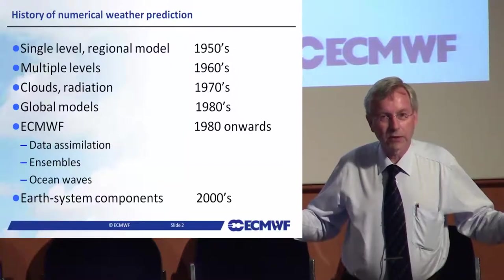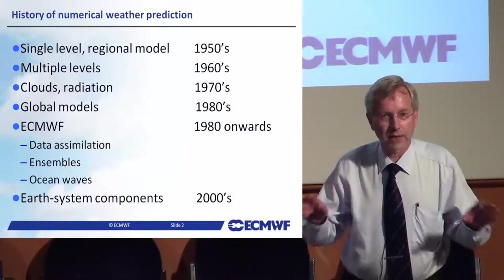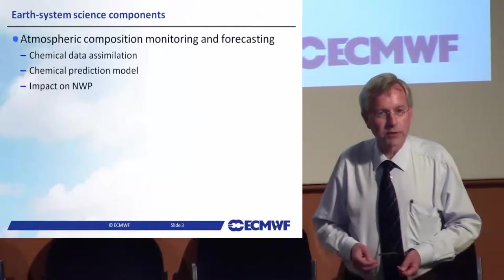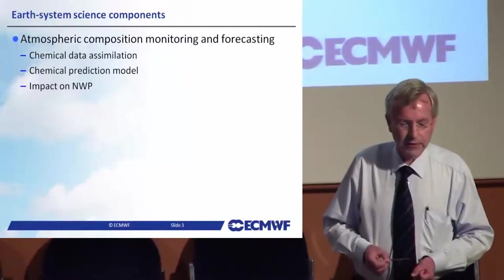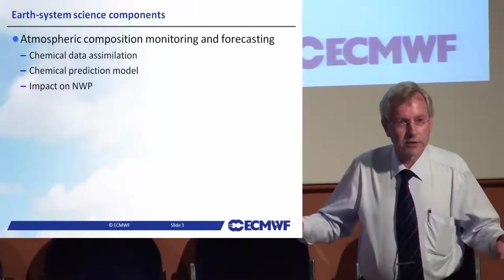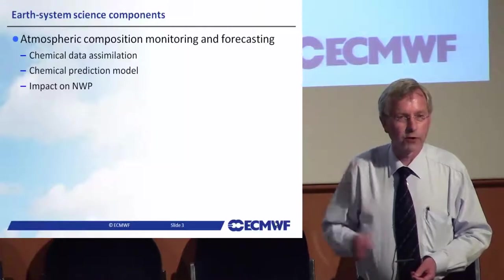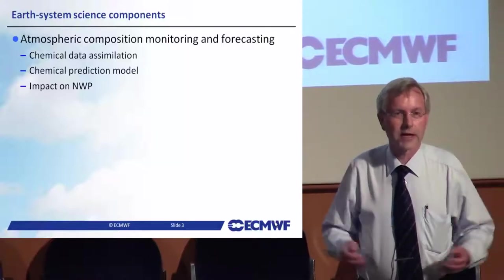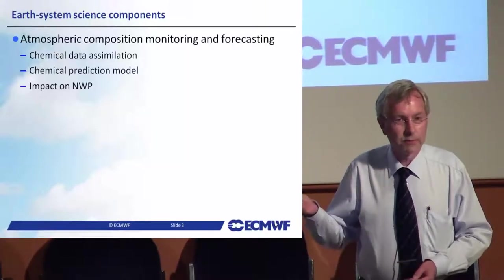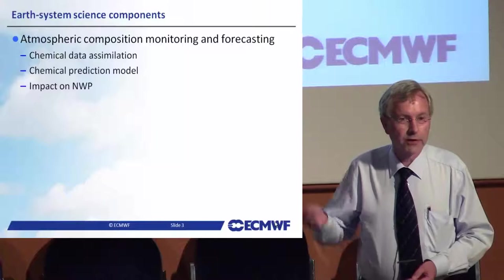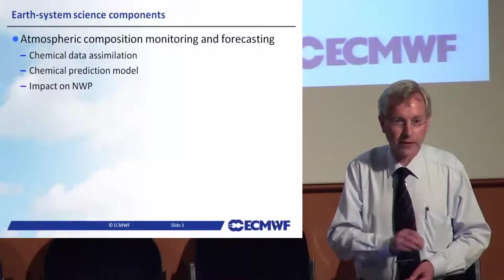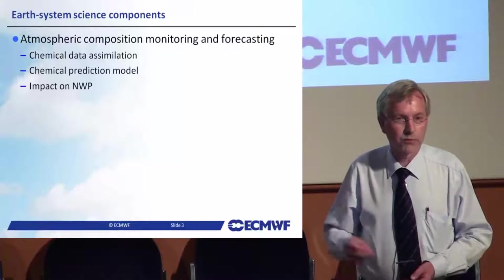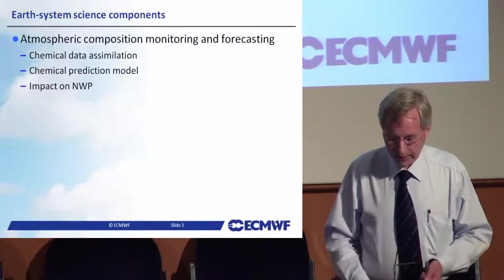Now we are moving into a domain where we cannot just look at ocean waves and the atmosphere — we have to consider all parts around it. The Earth system science components we are working on at ECMWF include, first of all, atmospheric composition: the constituents of the atmosphere — not just air molecules, but aerosols and different gases like carbon dioxide, carbon monoxide, and methane. These are important in their own right and also needed to enhance weather forecasting capability.